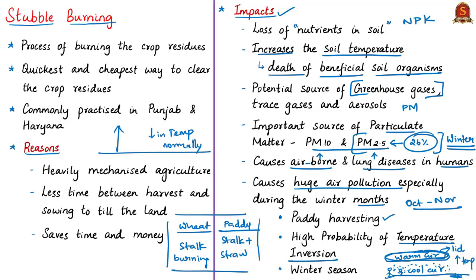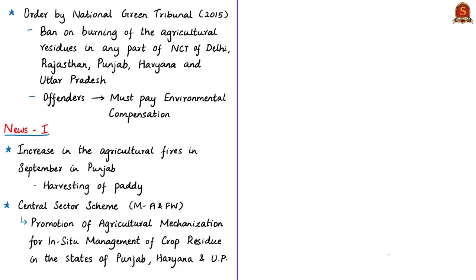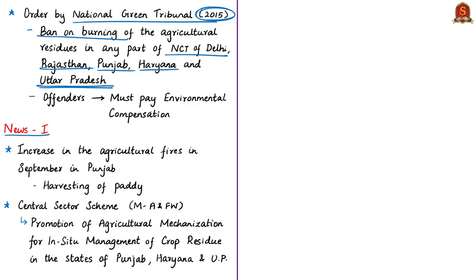The winter season is also marked with less wind speed or relative absence of wind. As a result, pollutants stay at ground level in the same region. Both the central and state governments have taken several measures to prevent stubble burning. The National Green Tribunal passed an order on 10th December 2015 banning the burning of crop residues in NCT Delhi, Rajasthan, Punjab, Haryana and Uttar Pradesh, with fines for violations.